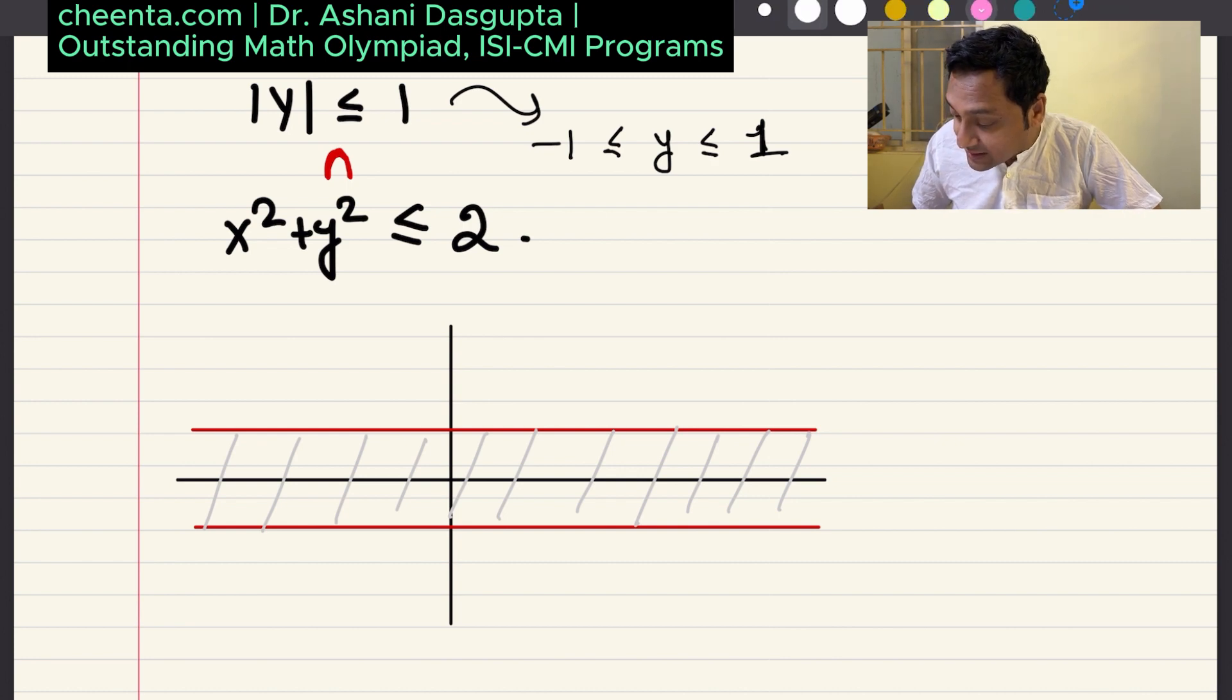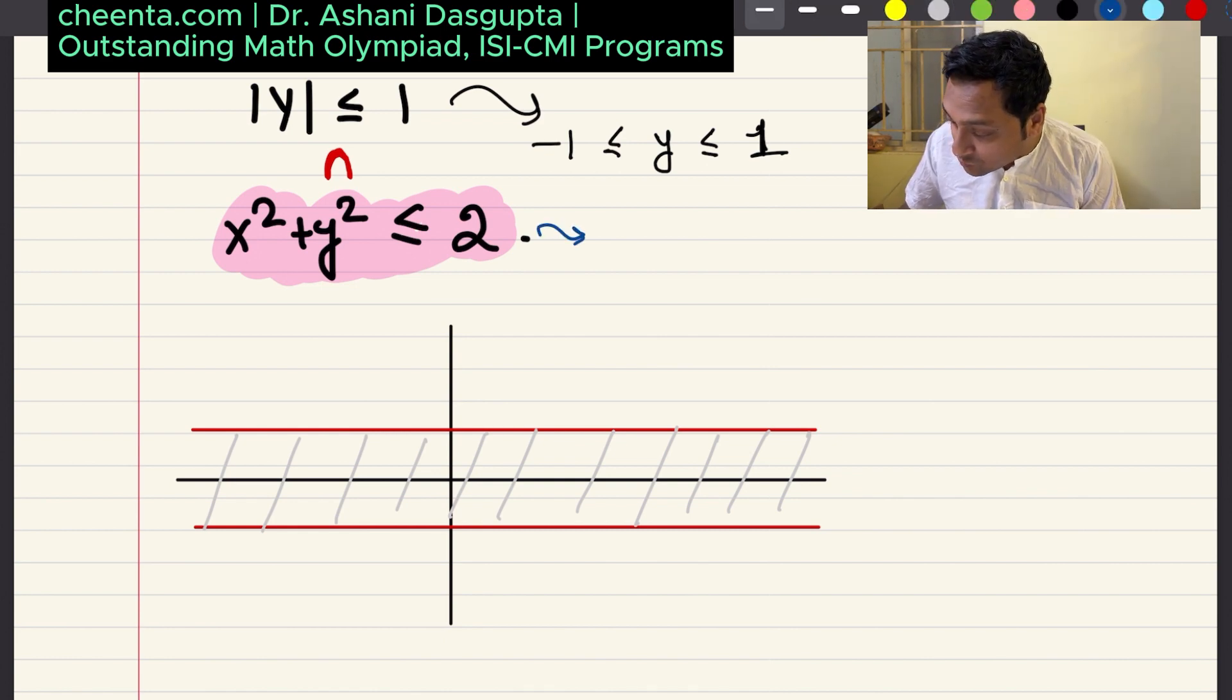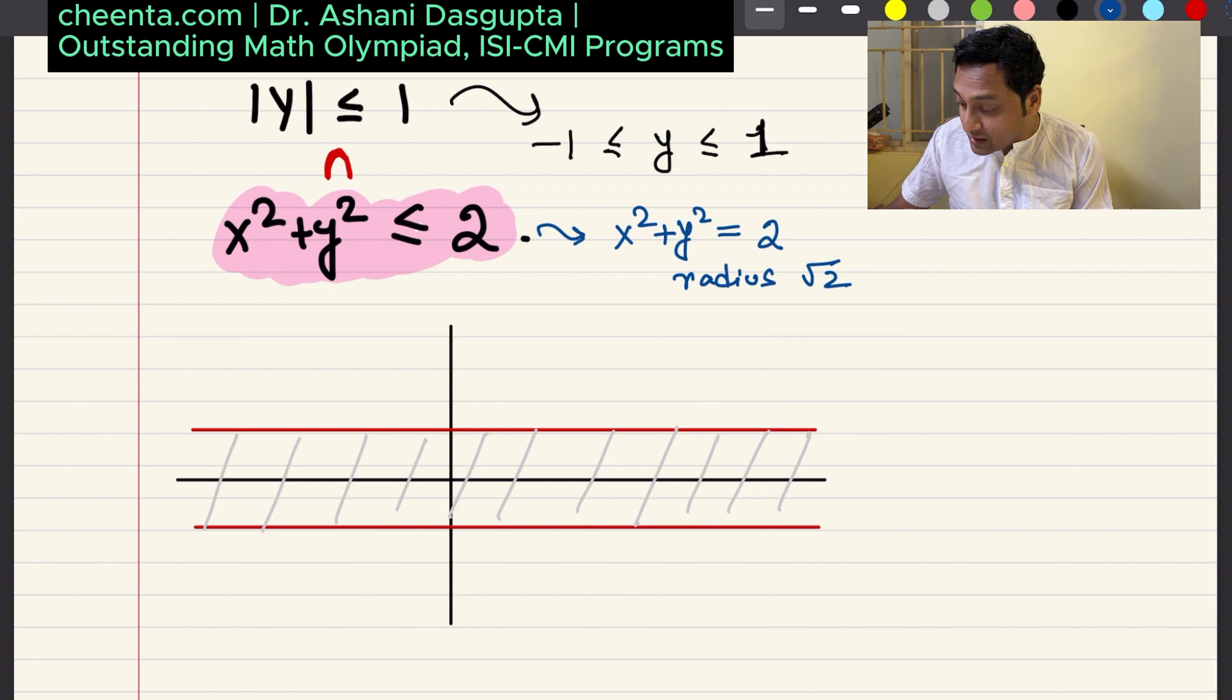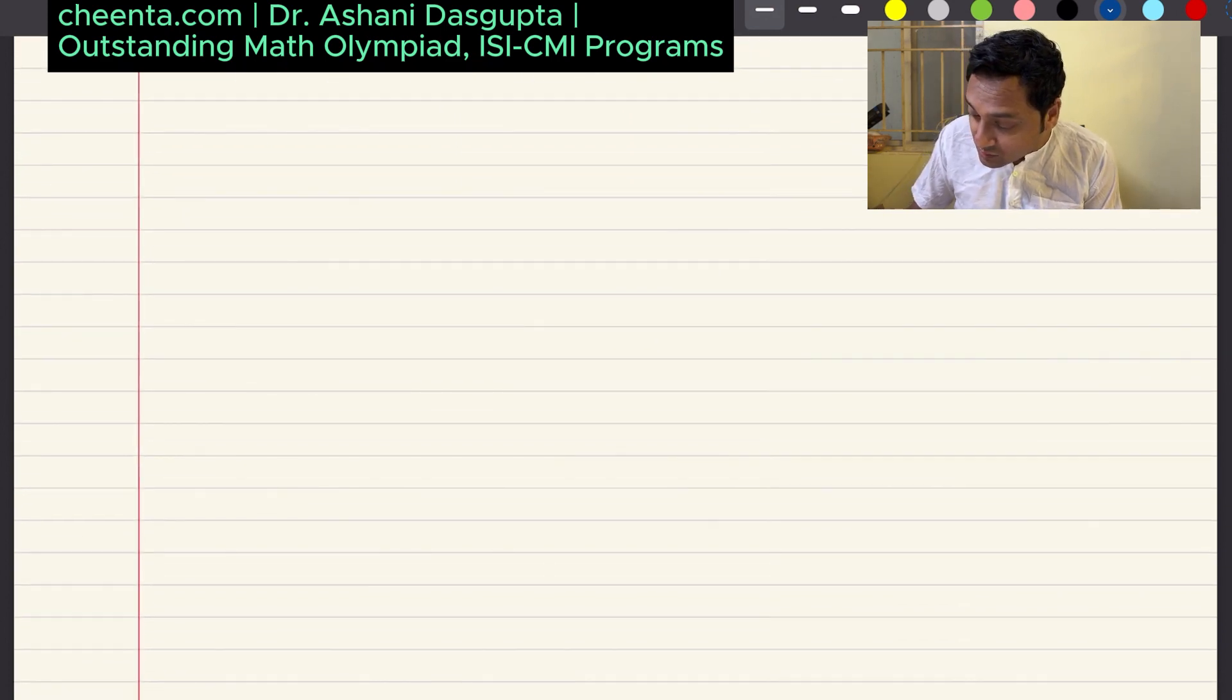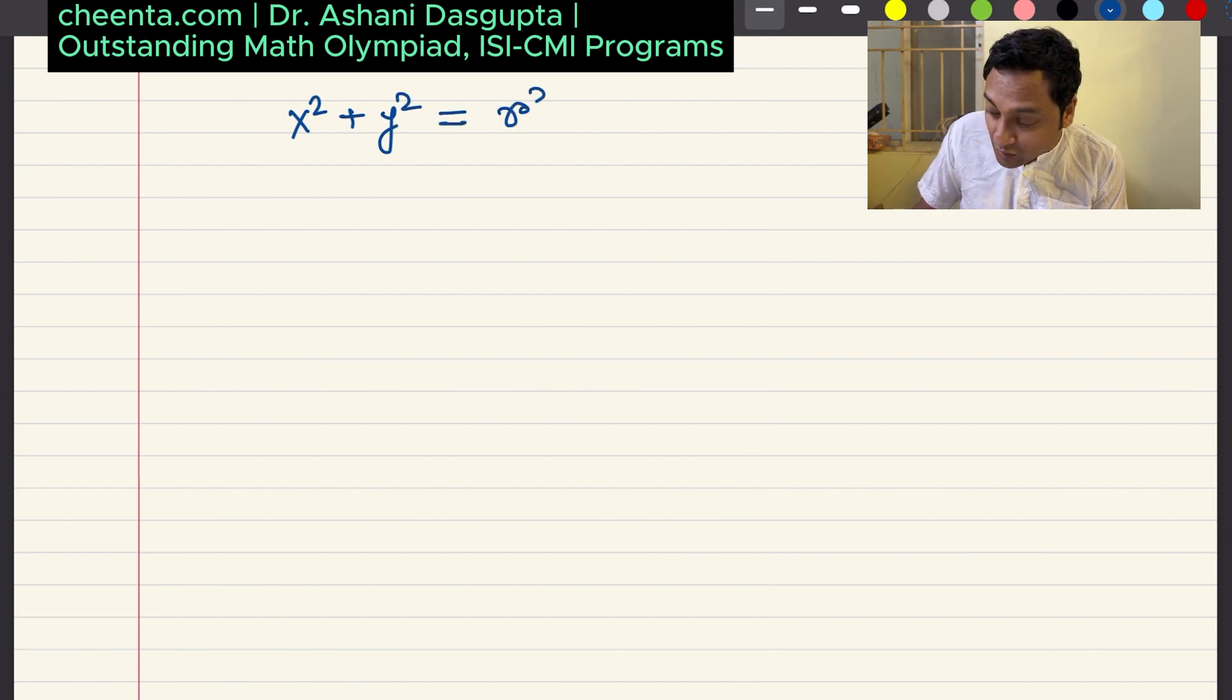All the points which are between these two red lines satisfy this condition that the y coordinate's absolute value is less than equal to 1. What is the second condition? The second condition is x squared plus y squared is less than equal to 2. Basically, if we write the corresponding equation, x squared plus y squared equal to 2, this is the equation of a circle with radius square root of 2.